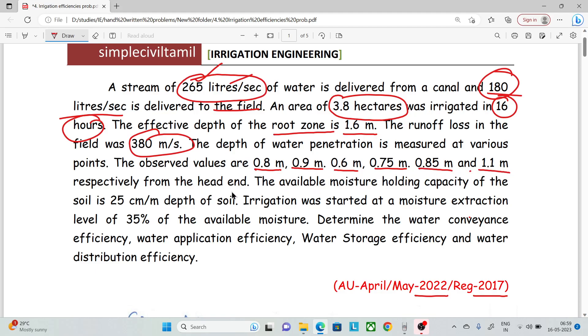The available moisture holding capacity of the soil is 25 centimeters per meter depth of soil. The irrigation was started at a moisture extraction level of 35%. Determine the water conveyance efficiency eta_C, water application efficiency eta_A, water storage efficiency eta_S, and water distribution efficiency eta_D.